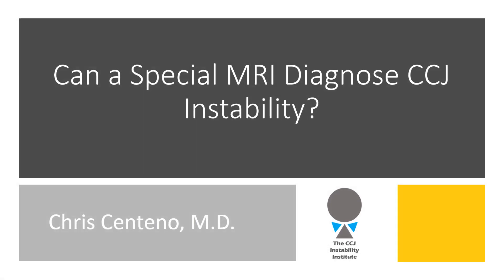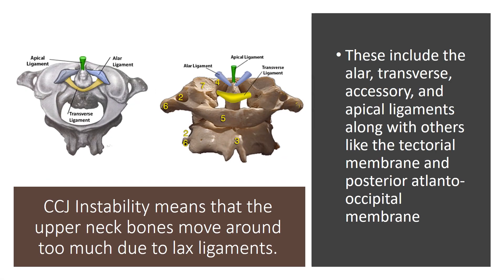Hi, it's Dr. Centeno, and I'd like to discuss whether a special MRI can diagnose CCJ instability. CCJ instability is upper neck instability, and it means that the ligaments that hold the head on — there are many of them described here — are either damaged or loose.